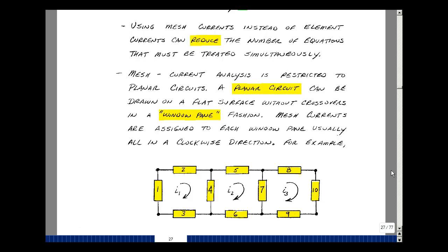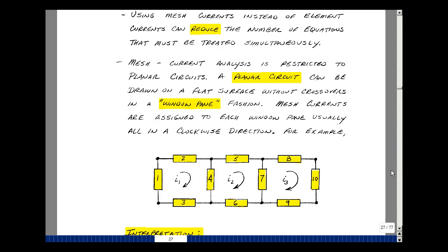Take a look at an example. So here's a circuit that has ten elements in it. We can draw it in a flat, two-dimensional space. And what you have here are sections that look like window panes, or you can think of them as meshes in a volleyball net. We're going to assign a current to each mesh, call this I1, I2, and I3, and these will become our unknowns.